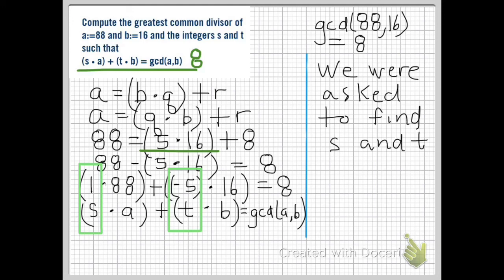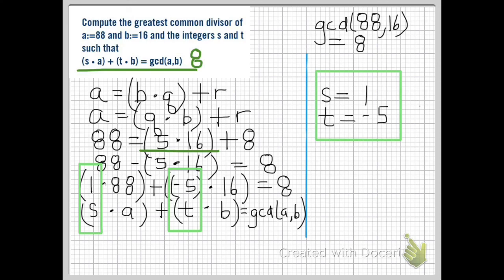So we were asked to find the GCD of 88 and 16 and we did. That equals 8. And we were asked to find s and t. S equals 1, t equals negative 5. And that's it.